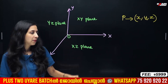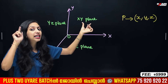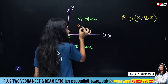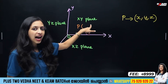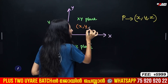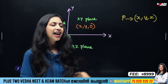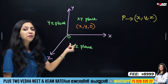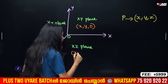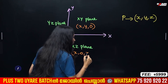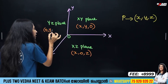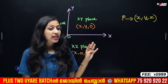In the XZ plane, the Y coordinate is missing — that means Y is equal to 0. Any point lying on the XZ plane has its Y coordinate equal to 0. Similarly, each plane has one coordinate equal to 0.